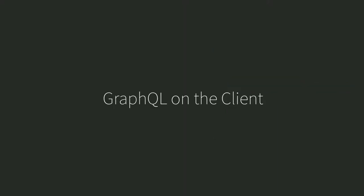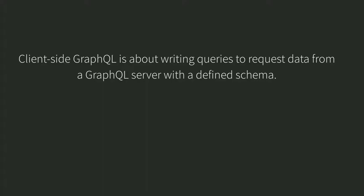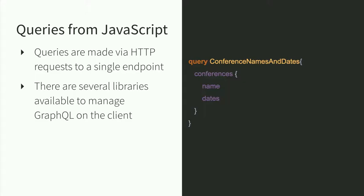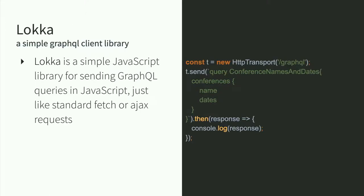How do we consume queries on the client? Client-side GraphQL is about writing queries to request data from a server with a defined schema. There are several libraries for making these requests from JavaScript. If you want to start as simply as possible, I'd recommend a library like Loca — a dead simple GraphQL client similar to jQuery.ajax, where you make the query directly to your server and have a promise API to handle the data. There's no caching, no magic, no client-side state management. It just makes a direct query to your service and is a great way to get started.